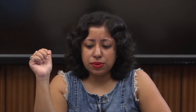As a result we know the users' behavior and how the existing system operates. Then we define the material products or immaterial services, actors, and flows in the existing system — similar to our systems map, which is a list of products, services, and actors (stakeholders) in the existing system, where we put down all material flows, service flows, information flows, and financial flows between the different stakeholders.